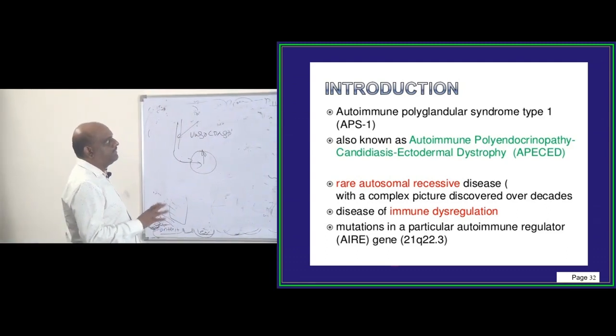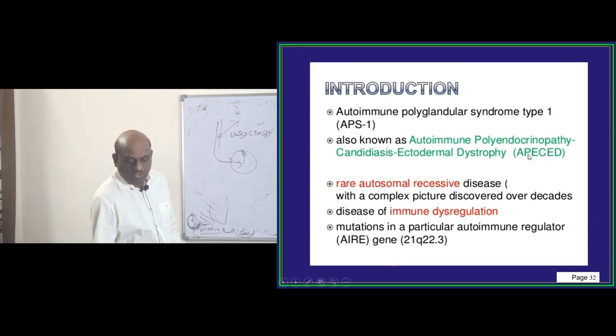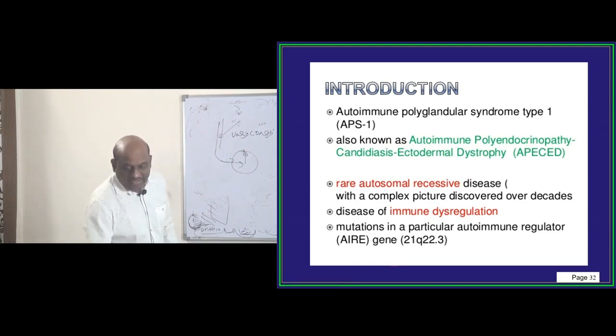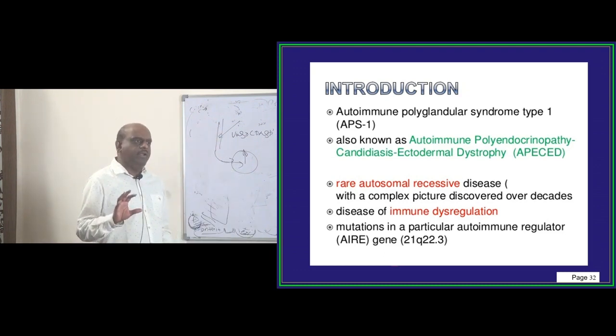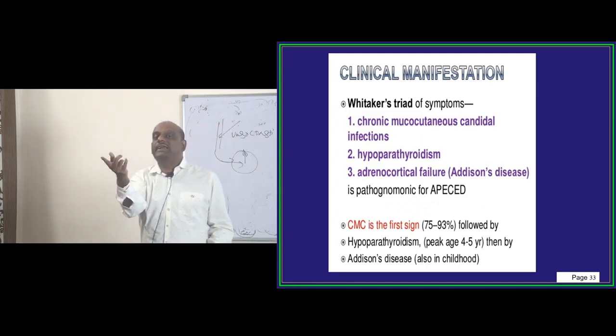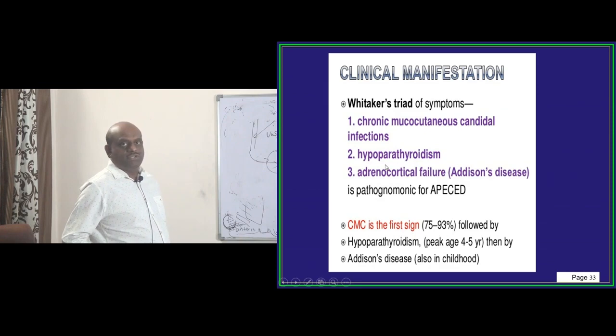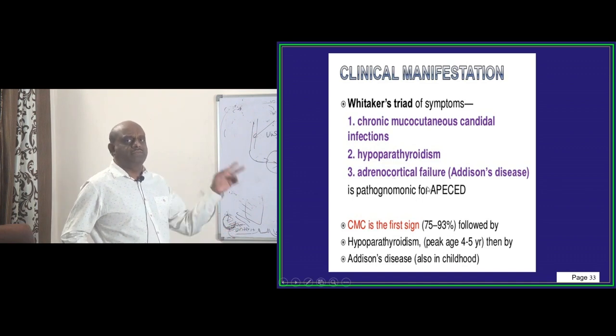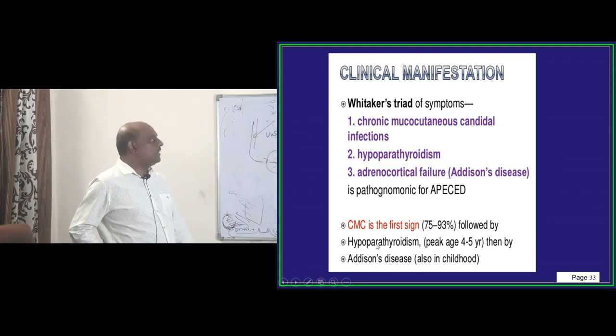Autoimmune polyglandular syndrome type 1 is also called APECED - autoimmune polyendocrinopathy, candidiasis, ectodermal dystrophy combination. It is autosomal recessive. Primary immune dysregulation is the underlying pathophysiology. Whitaker's triad of clinical symptoms: candidiasis, hypoparathyroidism, Addison - these three are called Whitaker's triad of symptoms, which are diagnostic of autoimmune polyglandular syndrome.